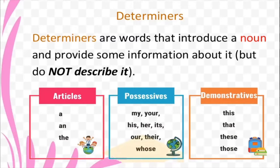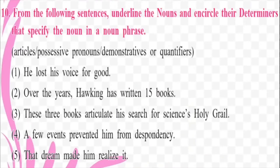So keeping this in mind, we will try and do the next exercise. From the following sentences, underline the nouns and encircle their determiners that specify the noun in a noun phrase. We will not only underline and encircle — we will also try to identify whether it is an article, whether it is a possessive pronoun, or whatever. Whenever we come to a question, I want you to pause the video and try to figure out the answer yourself.